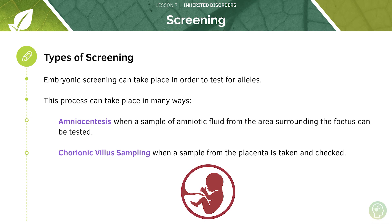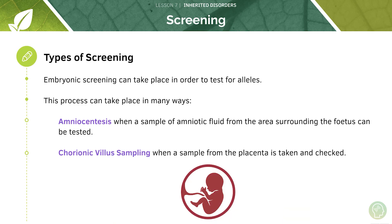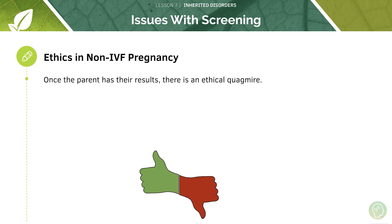The second method you have to know is chorionic villus sampling, where a sample from the placenta is taken and checked. The placenta is the nutrient source for the baby, and it's called chorionic villus sampling because the placenta contains little structures called villi. These are quite complicated terms but do commit them to memory: amniocentesis samples the amniotic fluid, whereas chorionic villus sampling samples the placenta directly. The DNA is taken from the embryo and tested, and you may be asked to identify the type of screening based on where the sample is taken.